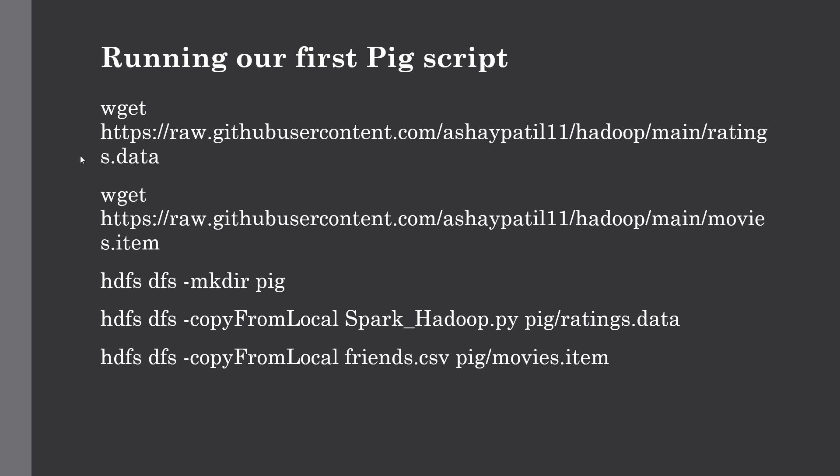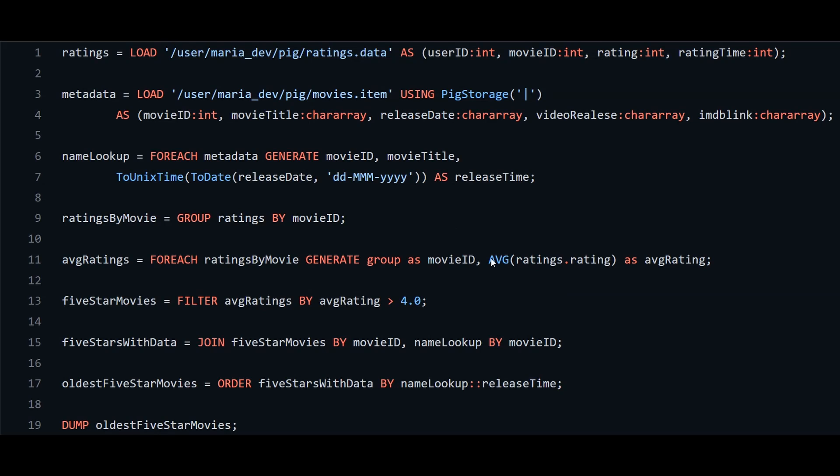For this example we will be dealing with our ratings.data and movies.item files, which we referred to during our previous lectures where we used those data files in the Hive lectures as well as the MapReduce lectures. We are going to use those two data files to get the most popular oldest movies.